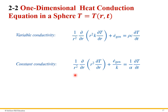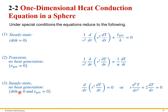We can repeat that analysis for a sphere to obtain the general spherical equation. For constant conductivity, the equation simplifies further, and we can identify the same three special cases: steady state, no heat generation, and both conditions together. You have to pay attention to how the problem is stated to figure out which equation to use.